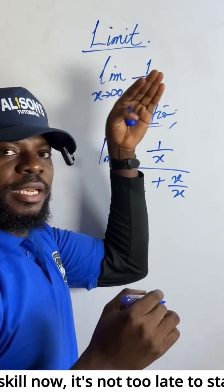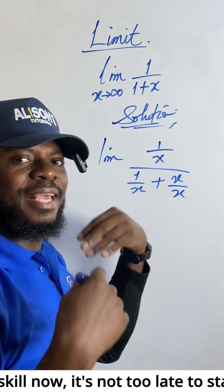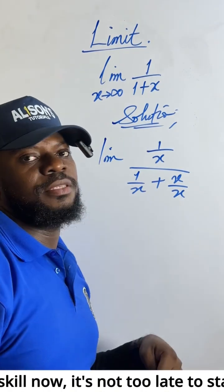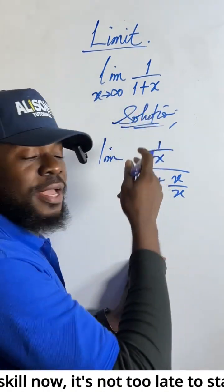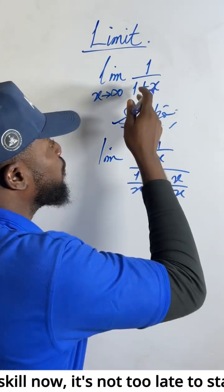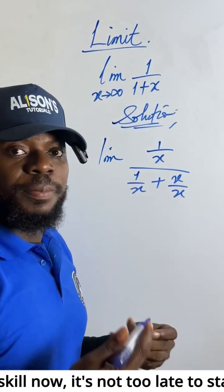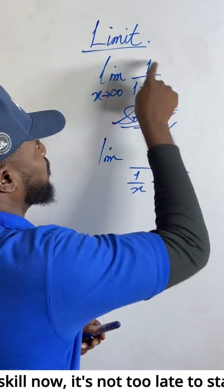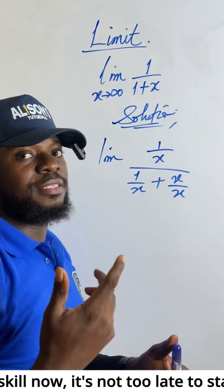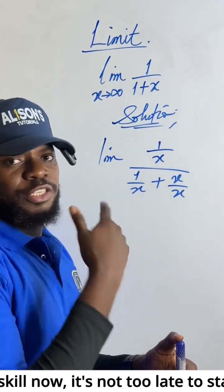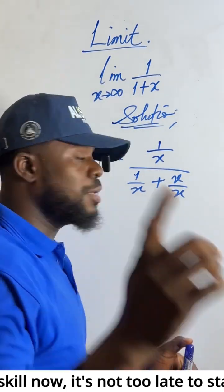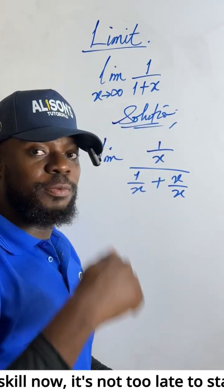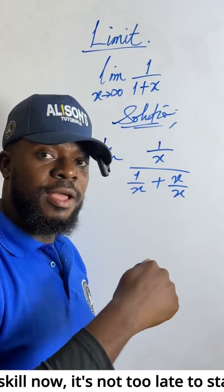That means we are dividing the numerator and the denominator by the highest power of the independent variable present. If you try to factorize or simplify, you'd have to apply a lot of differentiation rules to differentiate everything, and that wouldn't make sense. So the only way to do this is to divide the numerator and the denominator by the highest power of the independent variable present.